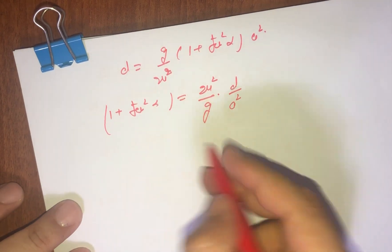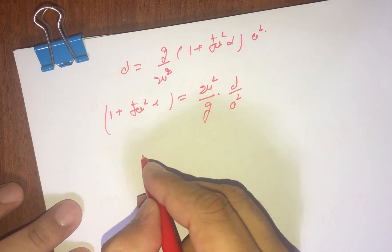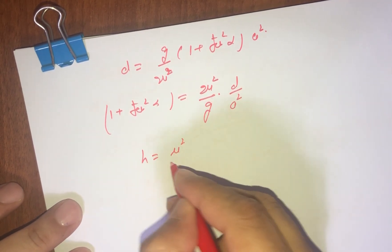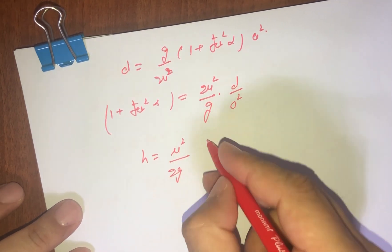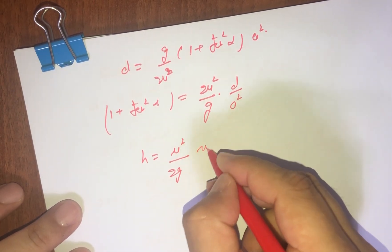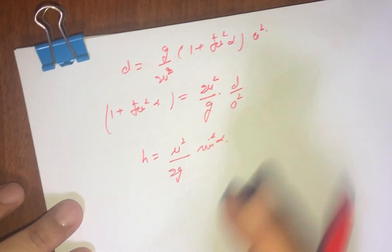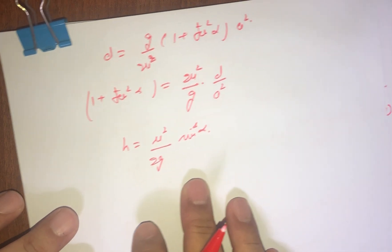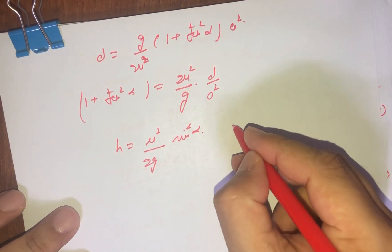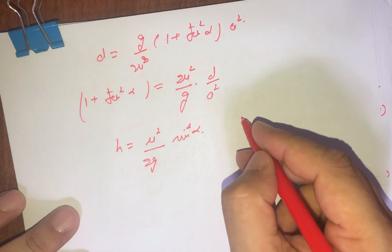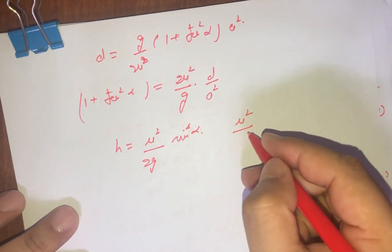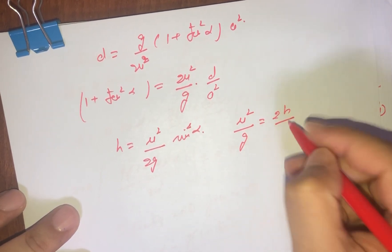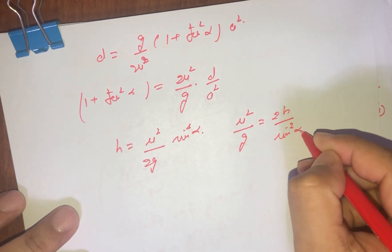We also know that the maximum height of the projectile is h = u²·sin²α/(2g), from which u²/g = 2h/sin²α.